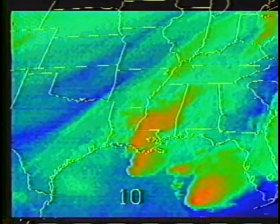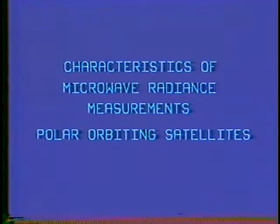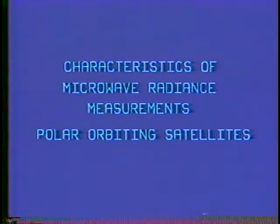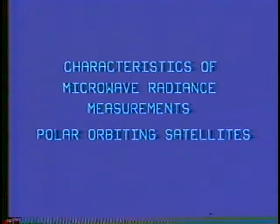The other VAS channels provide similar data. The combined effect of all 12 channels provides vertical and quasi-horizontal temperature and moisture information over the viewing area. A microwave sounding unit is part of the instrument package on polar orbiting satellites. Since microwave radiation suffers little attenuation from water vapor or small water droplets, these channels can sense radiation through clouds.